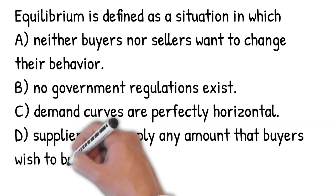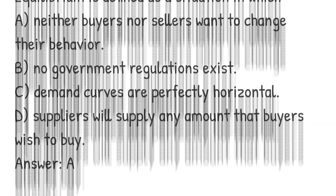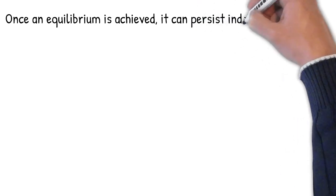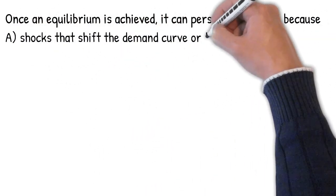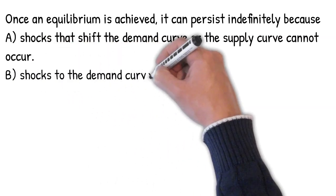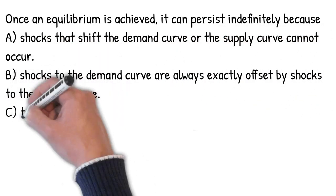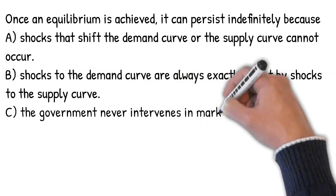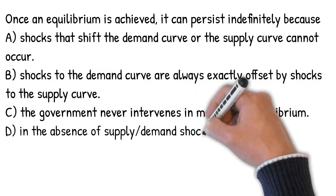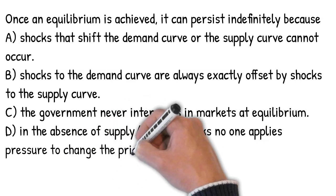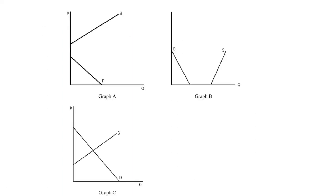Market equilibrium is defined as a situation in which neither buyers nor sellers want to change their behavior. You are given these three supply and demand graphs.